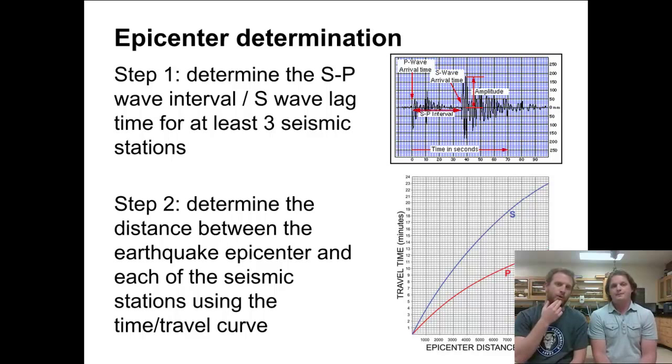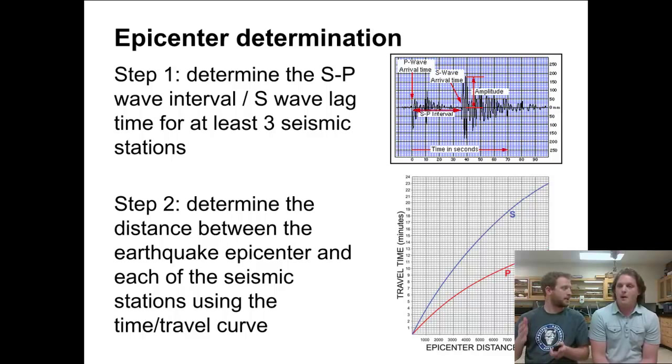So the further you are away from the earthquake, the lag time is going to be a lot greater. The difference between S wave and P wave arrival times is going to be greater the further we are away. That leads us towards step two. We figure out the distance between the earthquake epicenter and each of the seismic stations. We use that P and S wave difference in time. On the graph that we see on the bottom, as you move further and further to the right, our lag time is getting bigger and bigger. Because we know how fast they travel, we're able to plot that on the graph and then we know, based on the lag time, how far away we are.